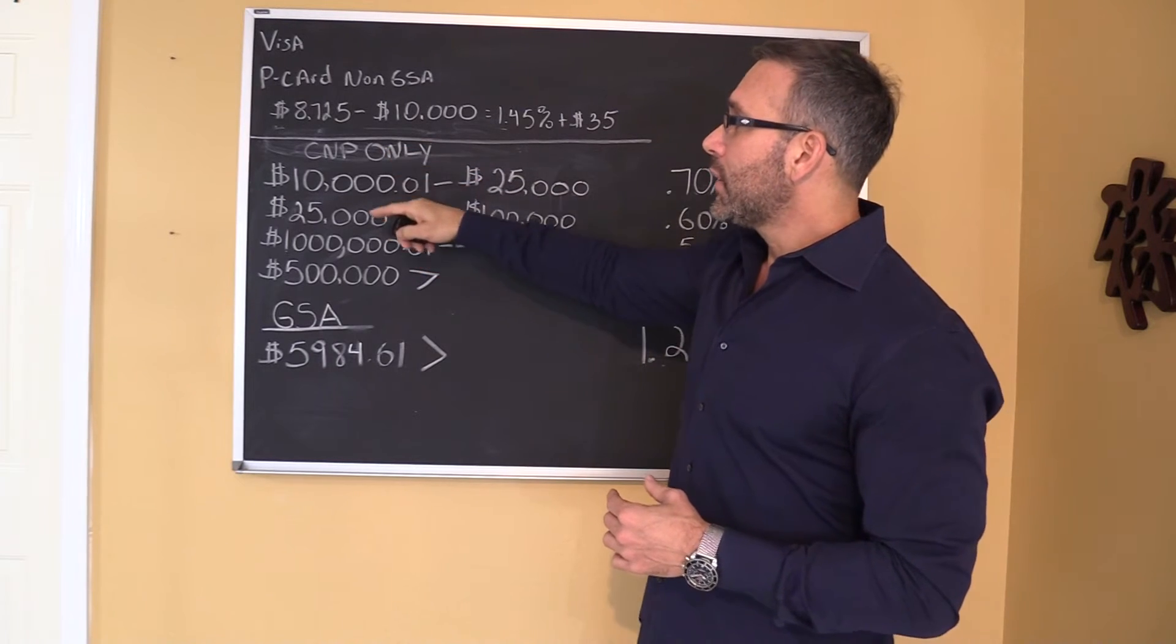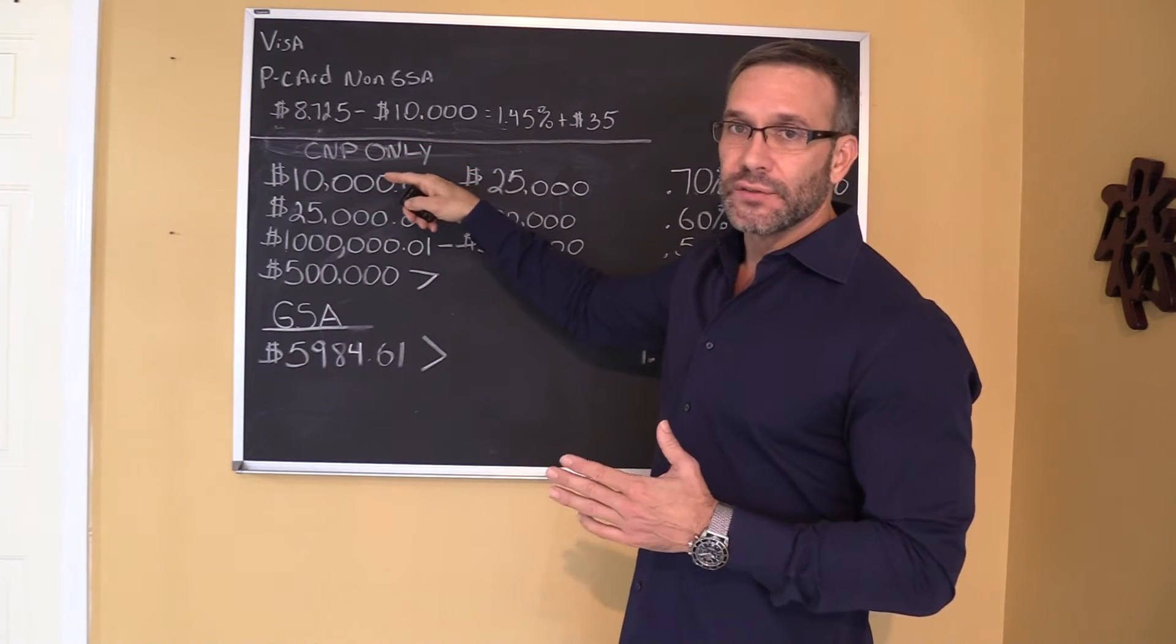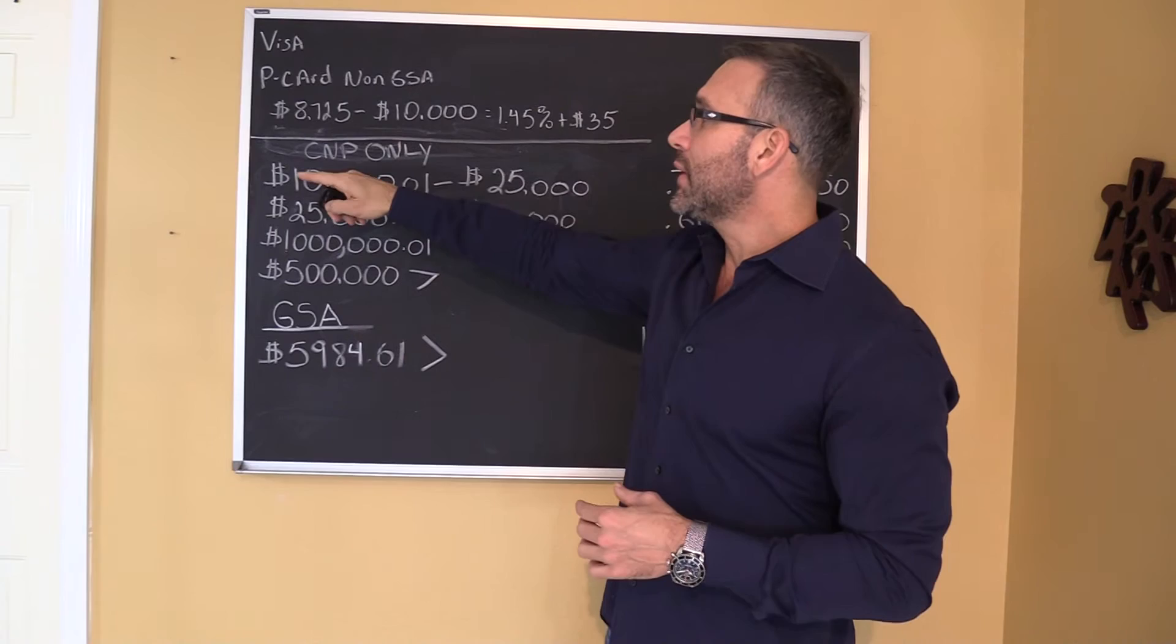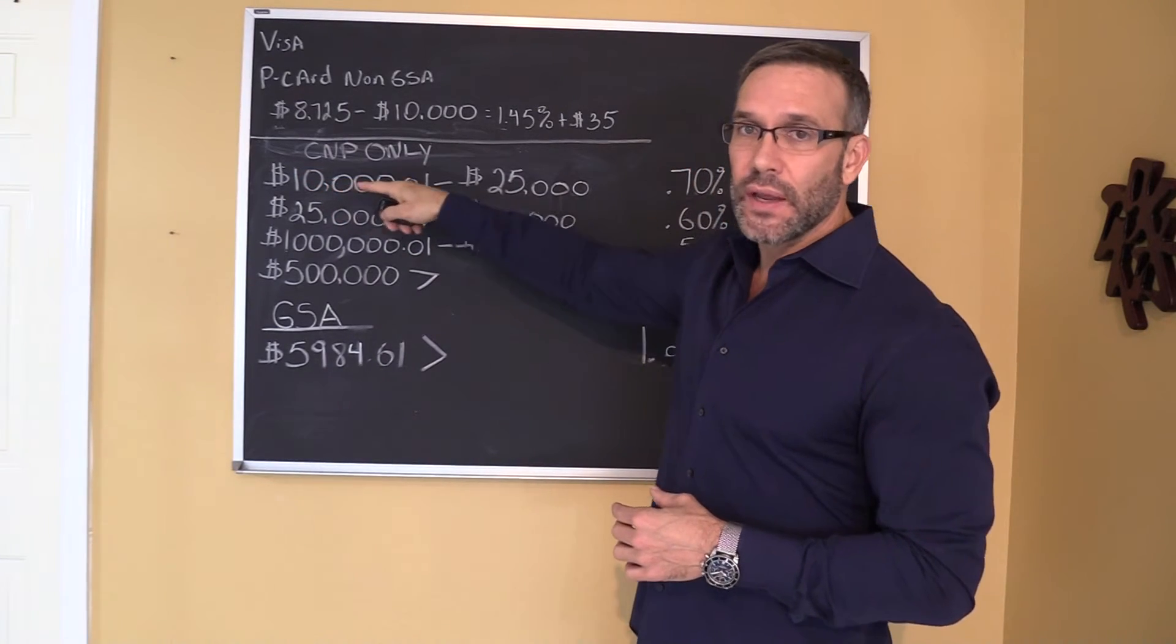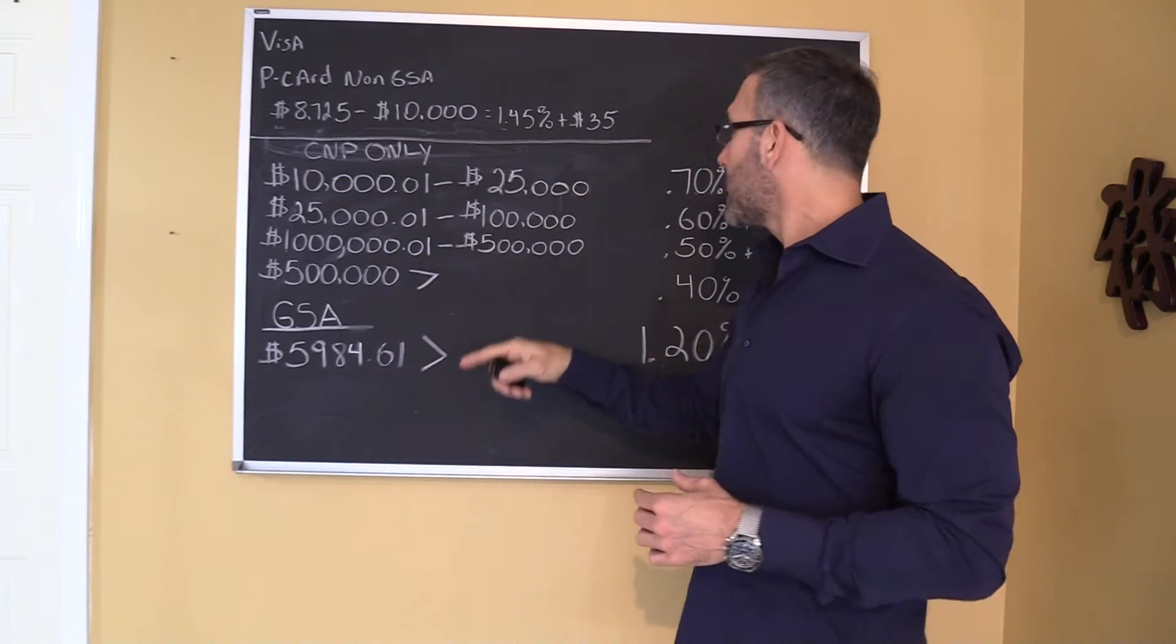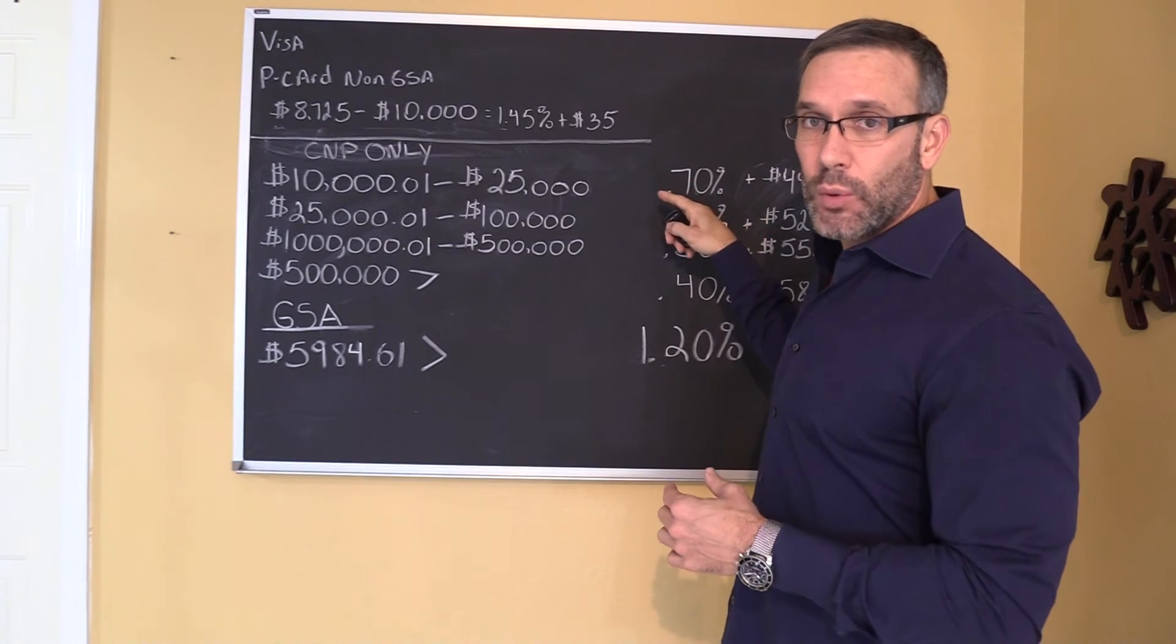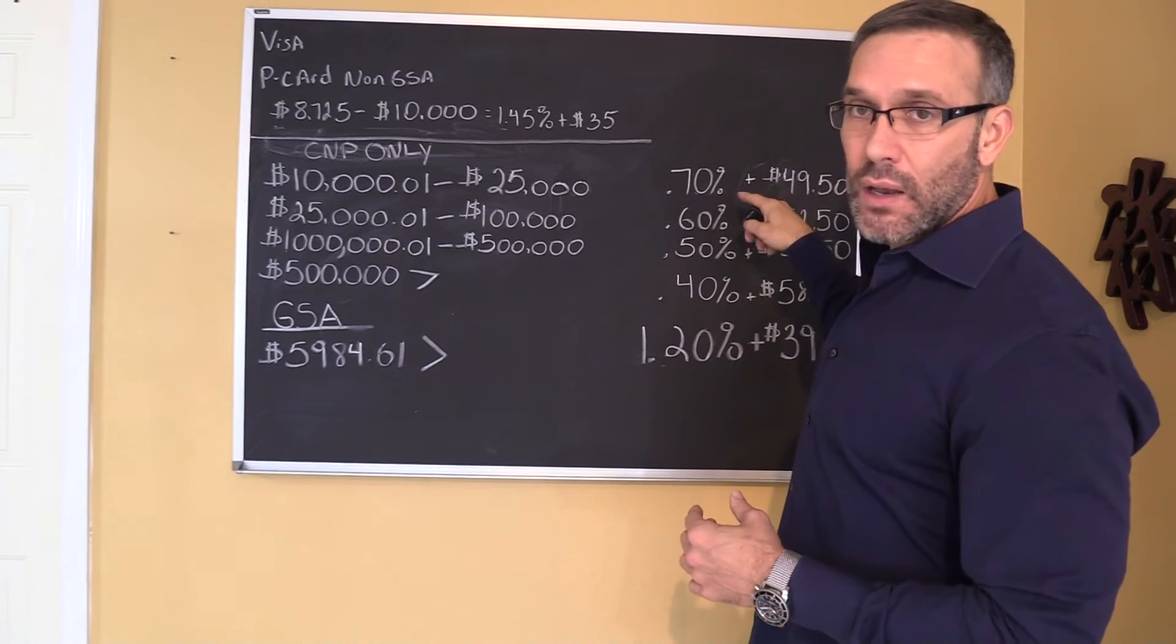So here going down, these only apply to your card not present, so only your keyed in transactions. Anything from $10,000 and 1 cent to $25,000 is only 70 basis points and a flat $49.50.